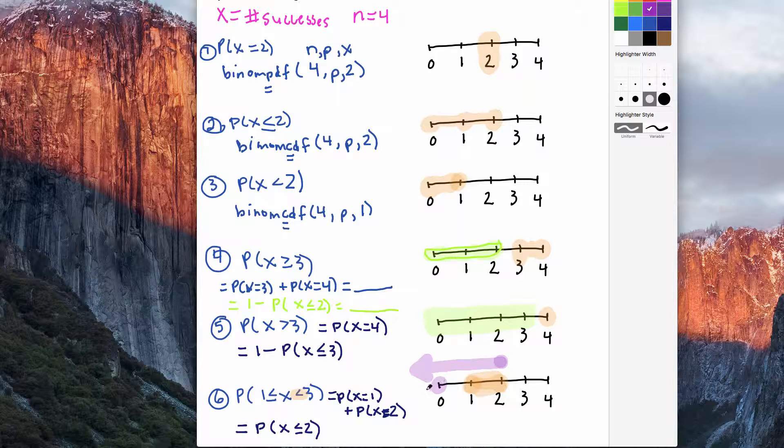So I will subtract the probability that x is equal to 0. So if I'm less than or equal to 2, that includes 2, 1, and 0 probabilities. But I don't want to be anything below 1. So I'll subtract the 0 probability.